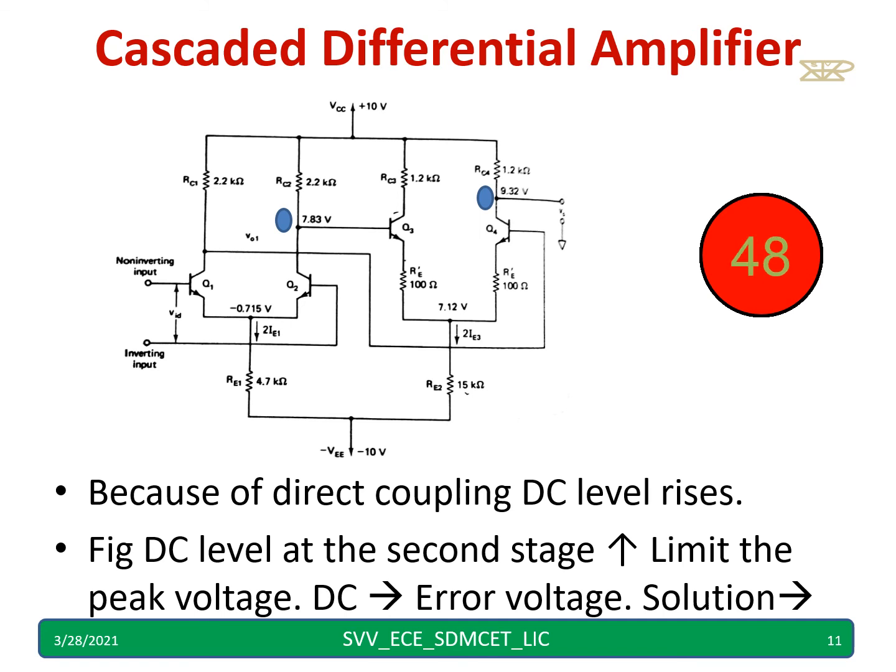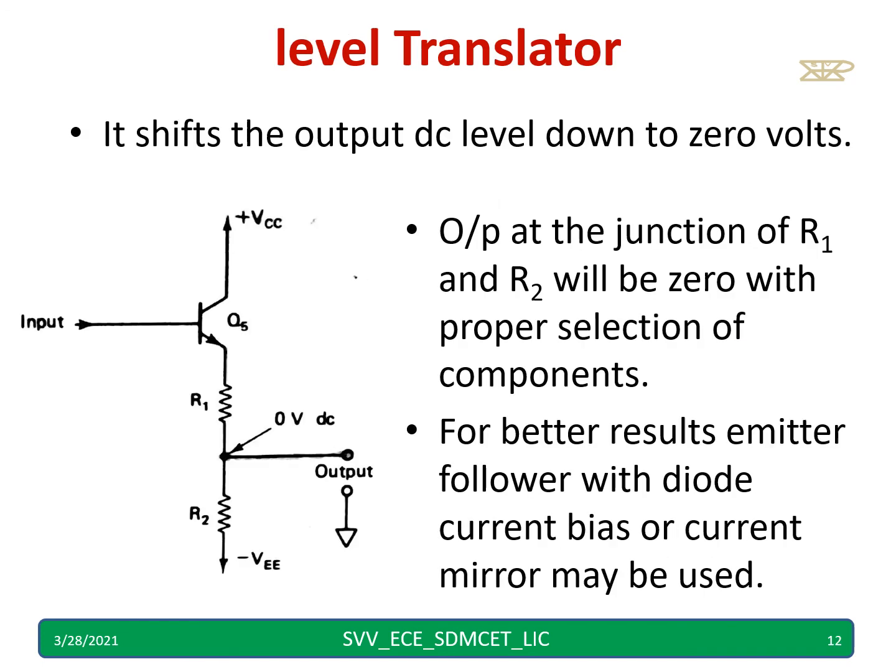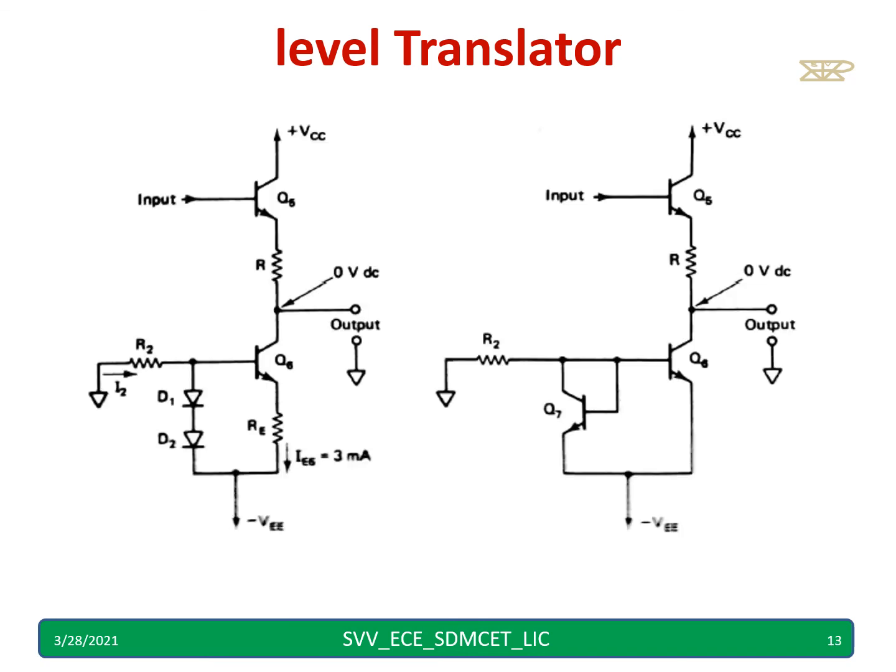The solution is what for this, we use a level shifter or a level translator. What it does, it shifts the output DC level to 0 volts. This is one simplest circuit is given. We have to choose R1 and R2 properly and junction of R1 and R2, we take our output. And for better results, instead of only R1 and R2, we can use an emitter follower with a diode, current bias or a current mirror can be used. Those circuits are shown in the next slide. These are the two circuits which you can use for a level translator to get a DC voltage equal to 0.